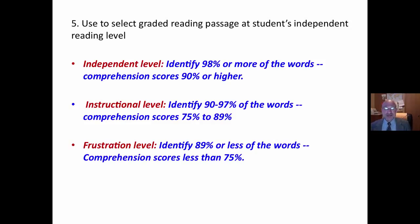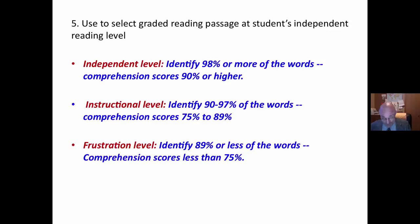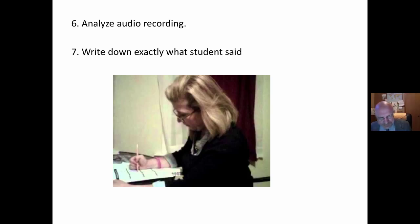At the independent level, students can read by themselves — 98% or more of the words, with 90% or higher on comprehension. At the instructional level, they read 90% to 97% of the words. You can see the frustration level criteria as well. We are using the graded word list to find that level and to inform the next part of the assessment.